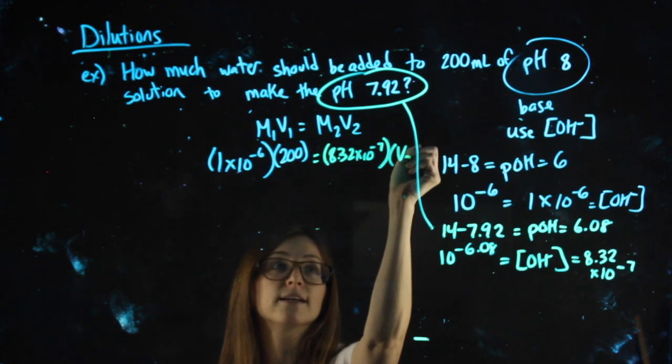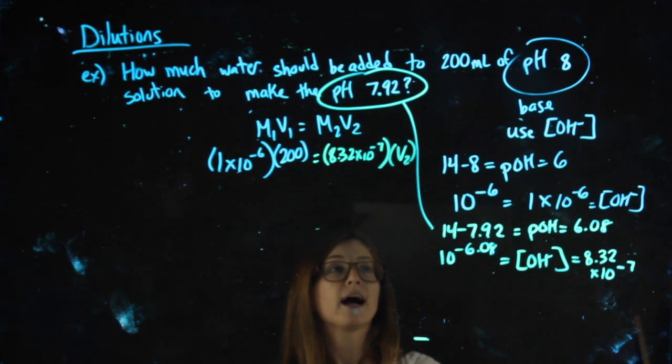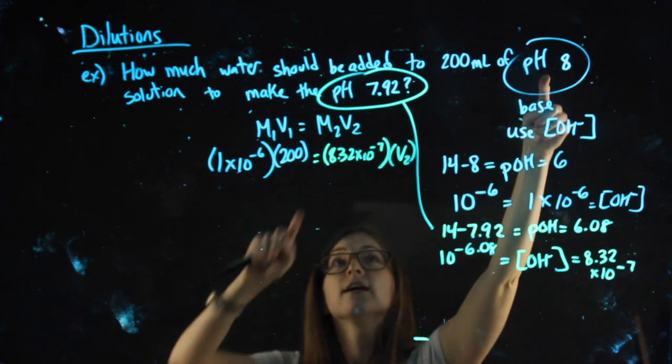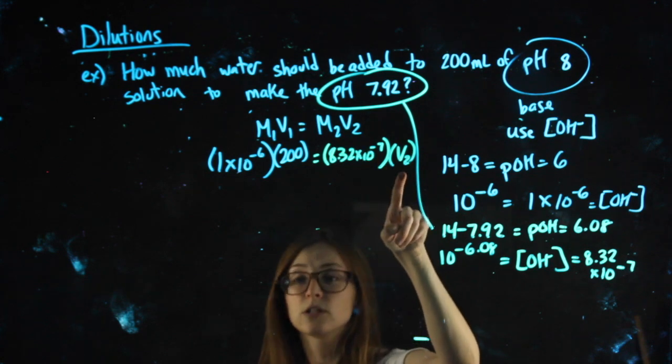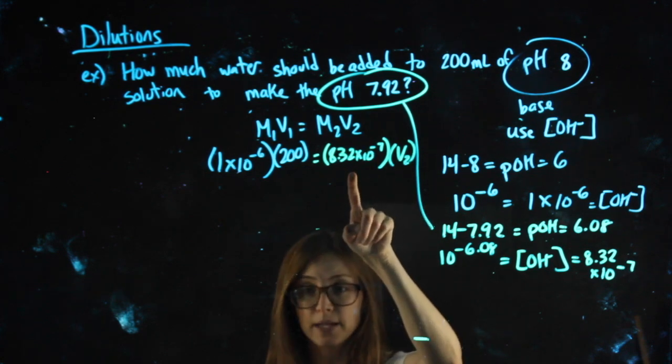Which means the only thing missing is my V2. So I have this basic solution, a certain amount of it. I dilute it, I add some water, I end up with a new solution with this molarity of OH-.